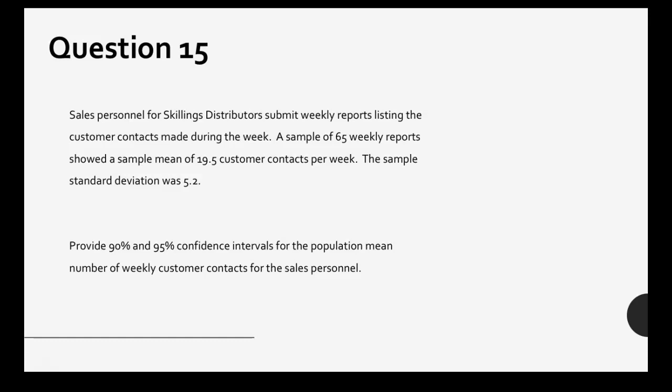Before we move on, let's go through and figure out what we know. We know that our sample size n is 65, our sample mean x̄ is 19.5, and s, our sample standard deviation, is 5.2.